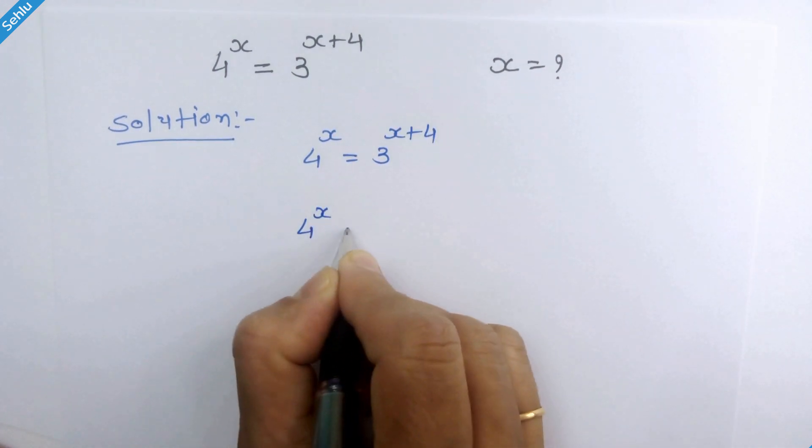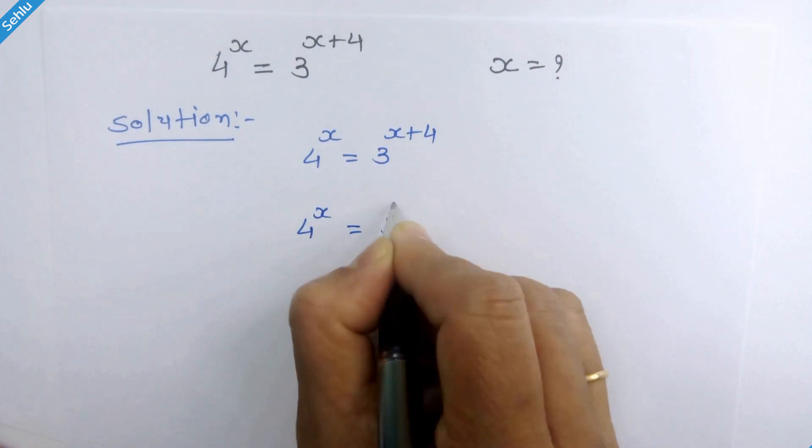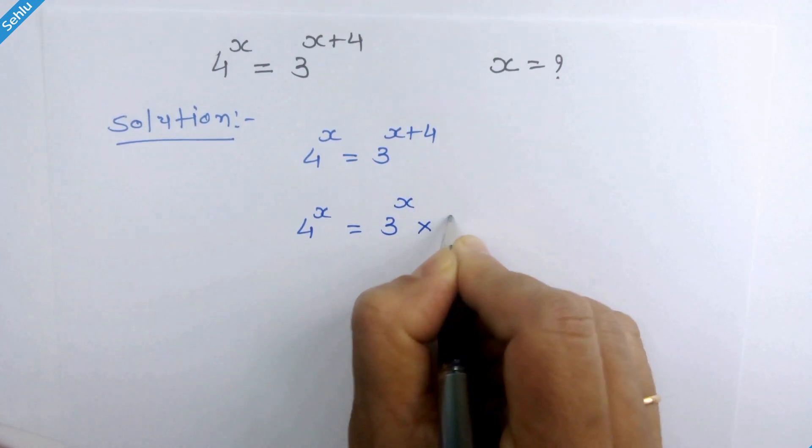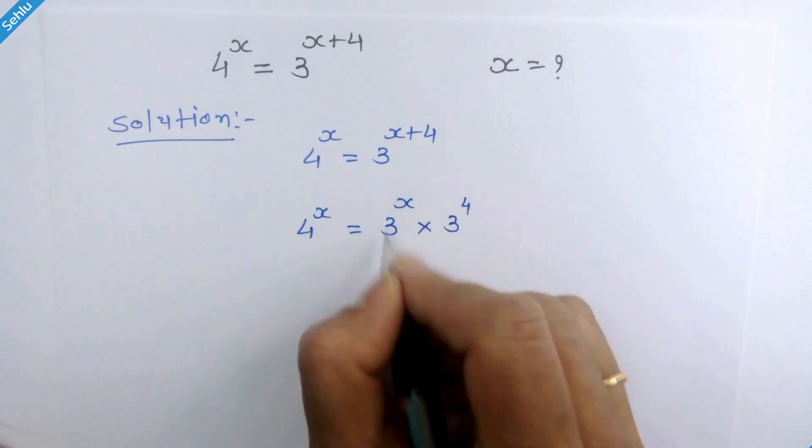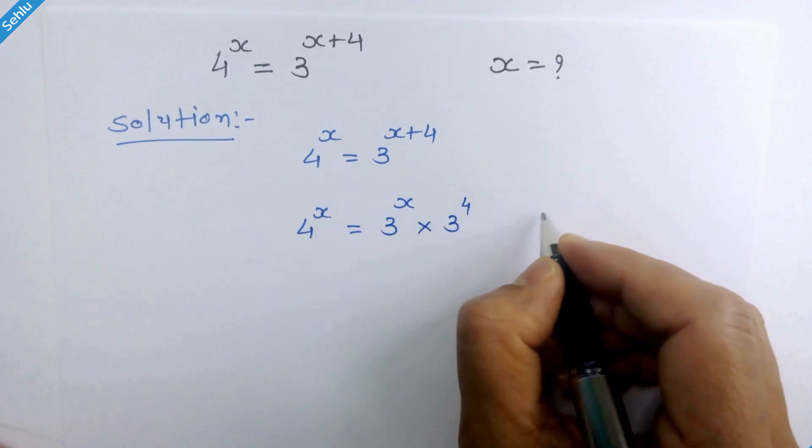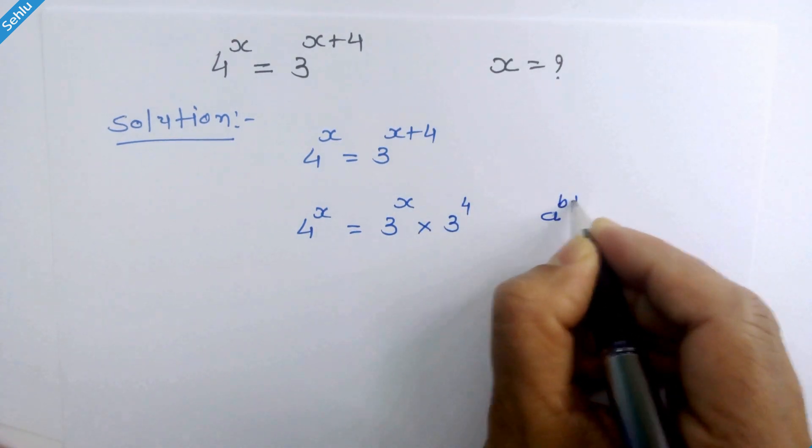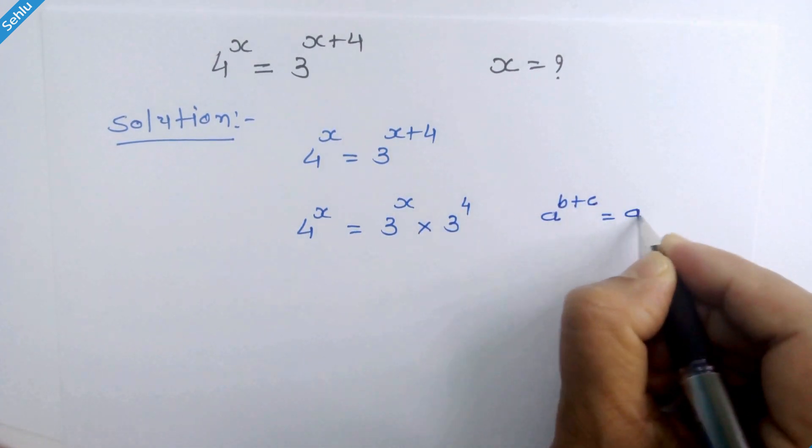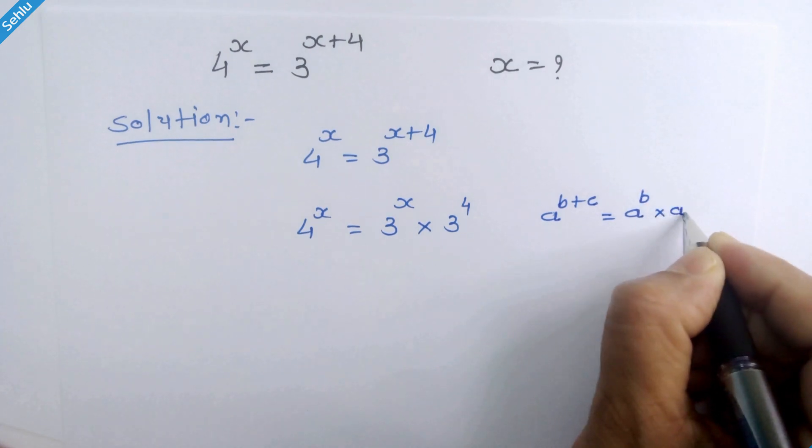Now we can write 4 raise to x is equal to 3 raise to x times 3 raise to 4. We can write this in place of this because if we have a raise to b plus c then it can be a raise to b times a raise to c.